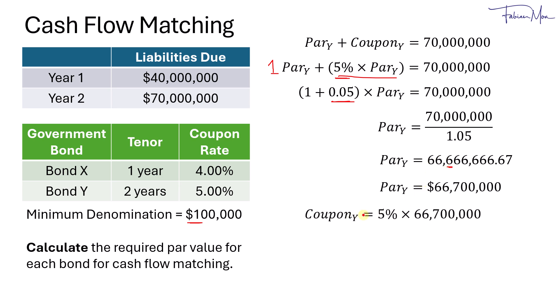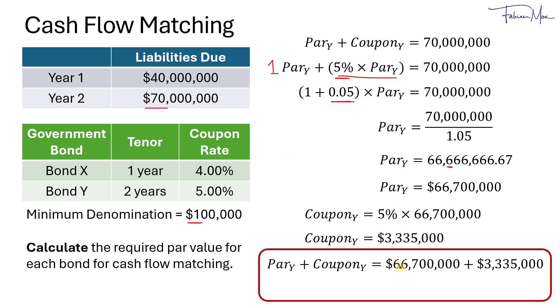What's the coupon? The coupon for bond Y would be 5% multiplied by the par value. And that gives us $3,335,000. Just to do a quick check to make sure that the calculation that we have here fits our purpose, which is to be able to meet the liability of 70 million, we'll take the par value plus the coupon. And that gives us $70 million and $35 thousand. So this is more than 70 million, so at least we do not fall short of the liability in year 2.